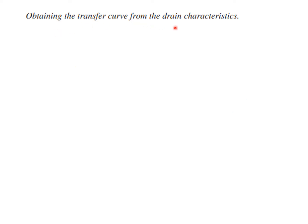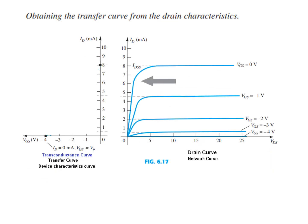Now, obtaining the transfer curve from the drain characteristics curve. We have already learned the drain characteristics curve, and one method of obtaining the transconductance curve is from this curve. The ID scale is the same in both graphs. On the base axis we select voltages VG = 0, VG = −1, VG = −2, and so on. We extend this line, so this will be our starting point — IDSS.